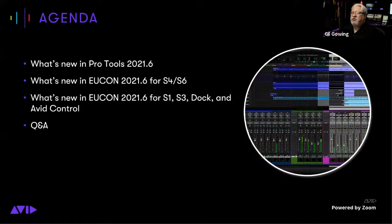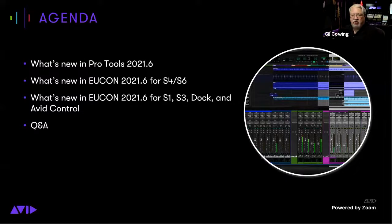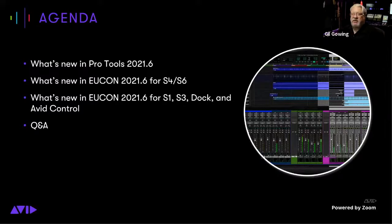Just real quick, let's talk about what we're covering today. First, we'll take you through what's new with Pro Tools 2021.6, which came out a few weeks ago, and then Yukon 2021.6. We're going to talk about what's new for S4 and S6, as well as what's new for Yukon 2021.6 for S1, S3, Dock, and Avid Control. At the end, we'll answer questions from the Q&A. Now I'll turn it over to Tony Joy.